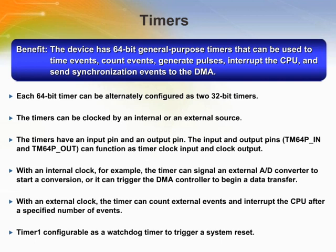The device has 64-bit general purpose timers that can be used to time events, count events, generate pulses, interrupt the CPU, and send synchronization events to the DMA. It has an interrupt/event enable/status register, read-reset timer mode to reset the timer count when the counter registers are read, reload registers to automatically update the period register and reset the timer counter when the initial timeout period has been reached, capture registers to record the counter value of the timer upon timeout or external event, and 8 compare registers with individual interrupts that trigger when the counter matches the compared value.